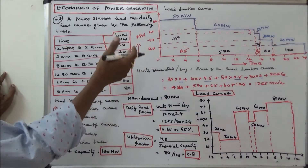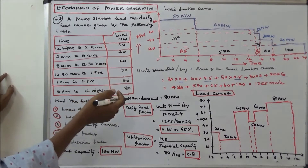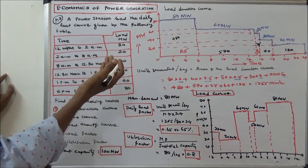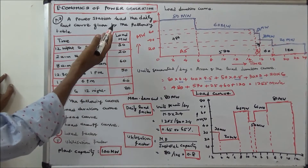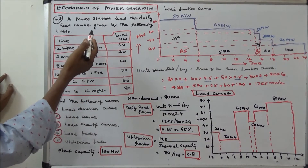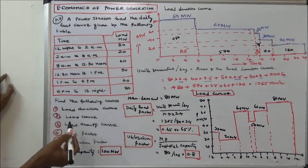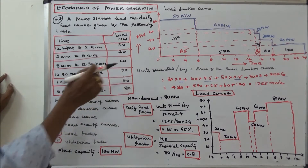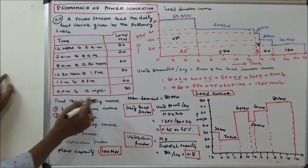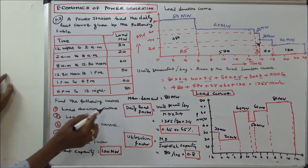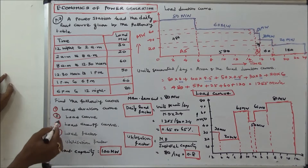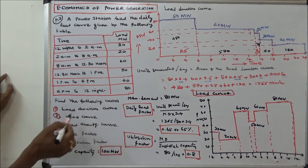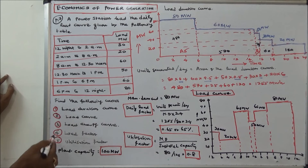This class we've worked out four problems. The first problem: a power station had the daily load curve given in the table. Find the following curves: number one, load duration curve; number two, load curve; number three, load energy curve; number four, load factor; number five, utilization factor.